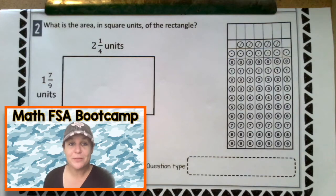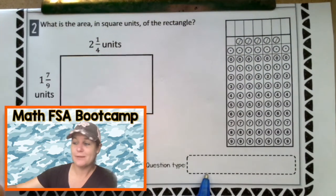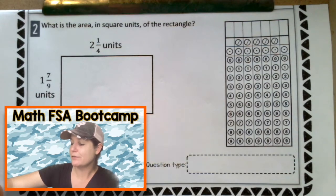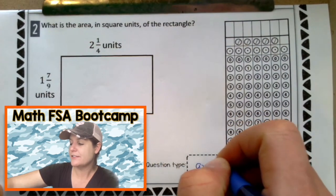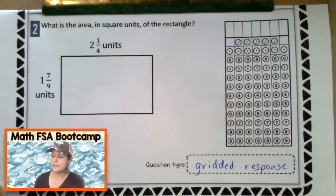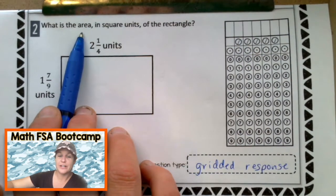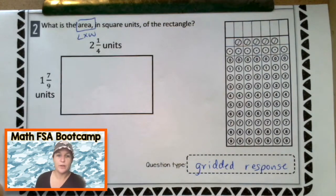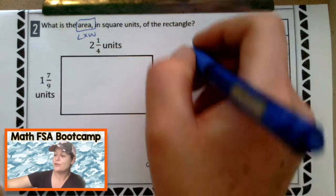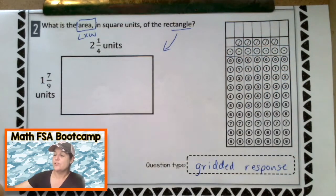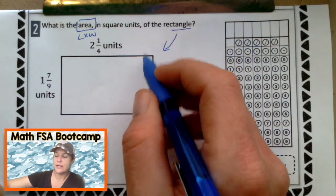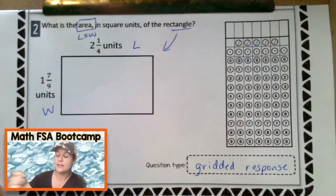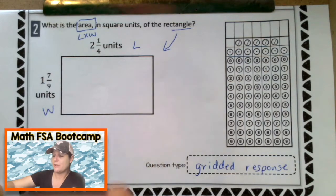All right, everybody, so here we go with number two. First, let's identify the question type. I see a grid right there, so what kind of question is this? It's a gridded response. Jot that down if you did not already. Okay, and now let's go ahead and read the question. It says, what is the area? Area means for a rectangle that I'm multiplying length times width in square units of this rectangle. So my length is right here. It's two and one-fourth. My width is right there. It's one and seven-ninths. And I just need to multiply them.